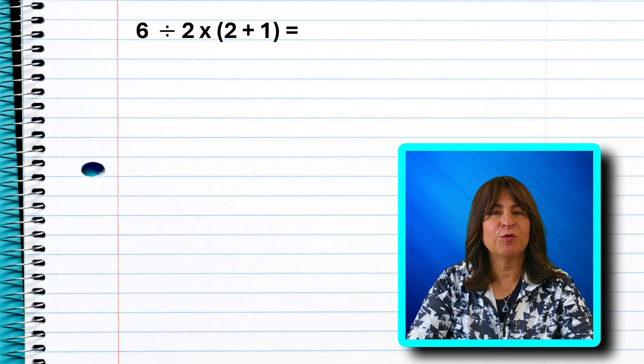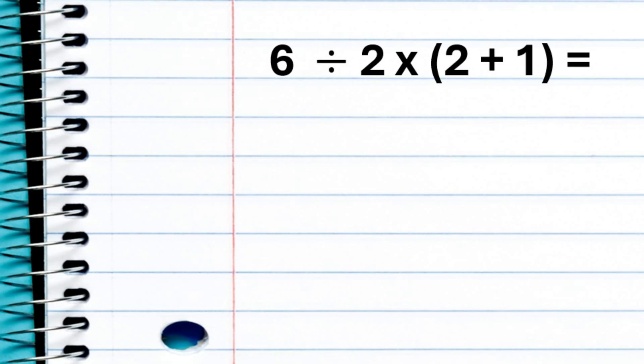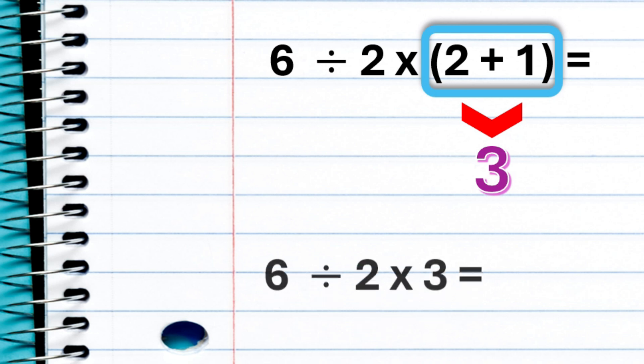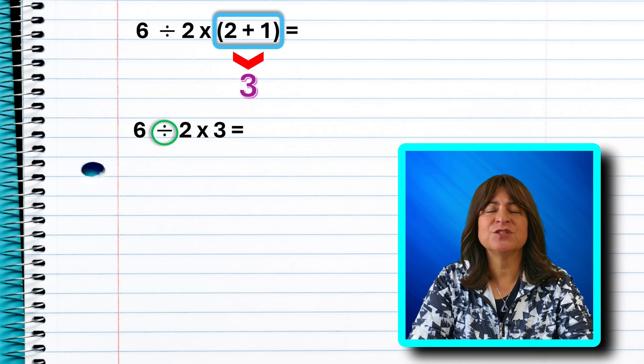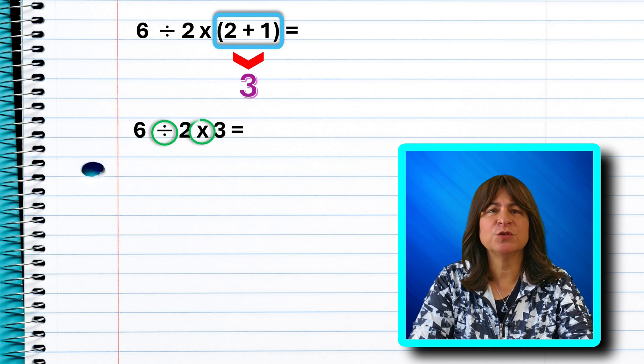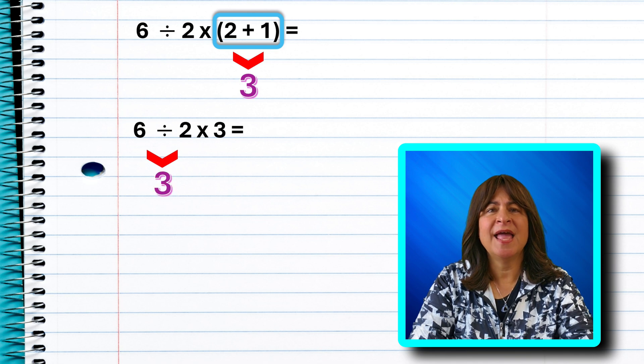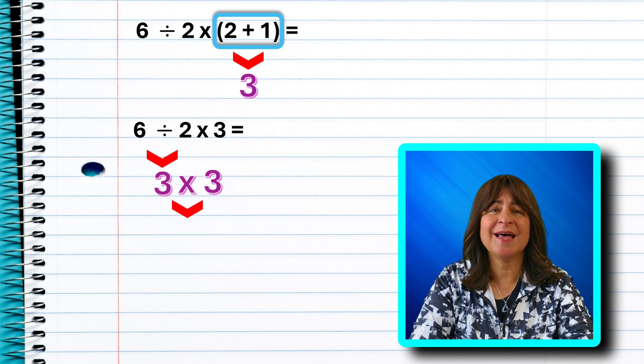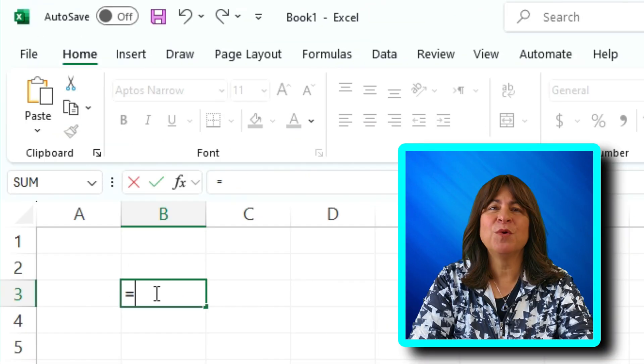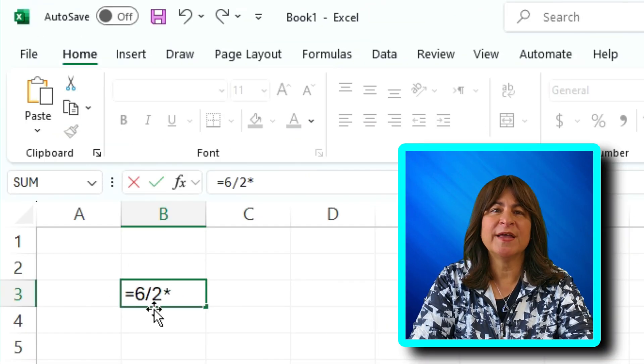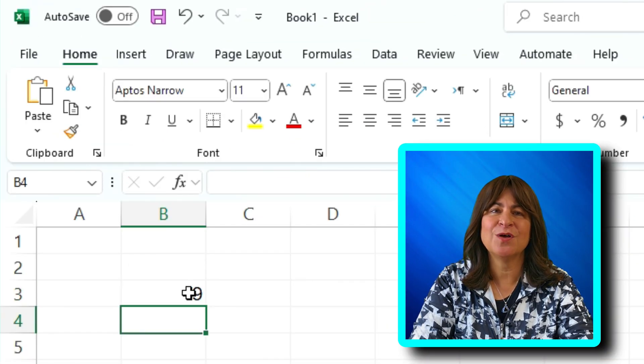Now let's take a look at the viral problem. It is 6 divided by 2 times, and in parentheses, 2 plus 1. So first we take what's in parentheses. So that's 2 plus 1, which is 3. So now we have 6 divided by 2 times 3. And now the problem has just division and multiplication, which have equal standing. So reading from left to right, 6 divided by 2 is 3. And 3 times 3 is 9. So the answer is 9. By the way, if you write the problem this way in Excel, you can see the answer is also 9.